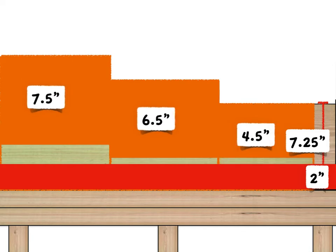The exception allows a minimum distance to be reduced from five and a half inches to four and a half inches. But only when a 2x8 ledger is on a 2x8 band joist.